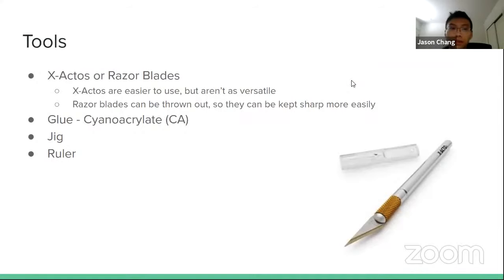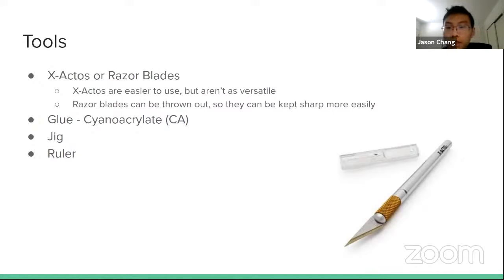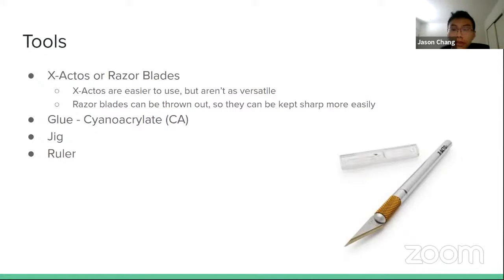The tools required for Boomilever and other balsa events are pretty basic — really just the materials you need. That includes the wood, plus an X-Acto knife or razor blades. A picture of an X-Acto knife is shown, which most builders use. You'll also need some type of superglue, commonly called cyanoacrylate or CA glue. It's also marketed as Gorilla Glue or similar types. People use this over wood glue because it dries quickly and is much stronger.